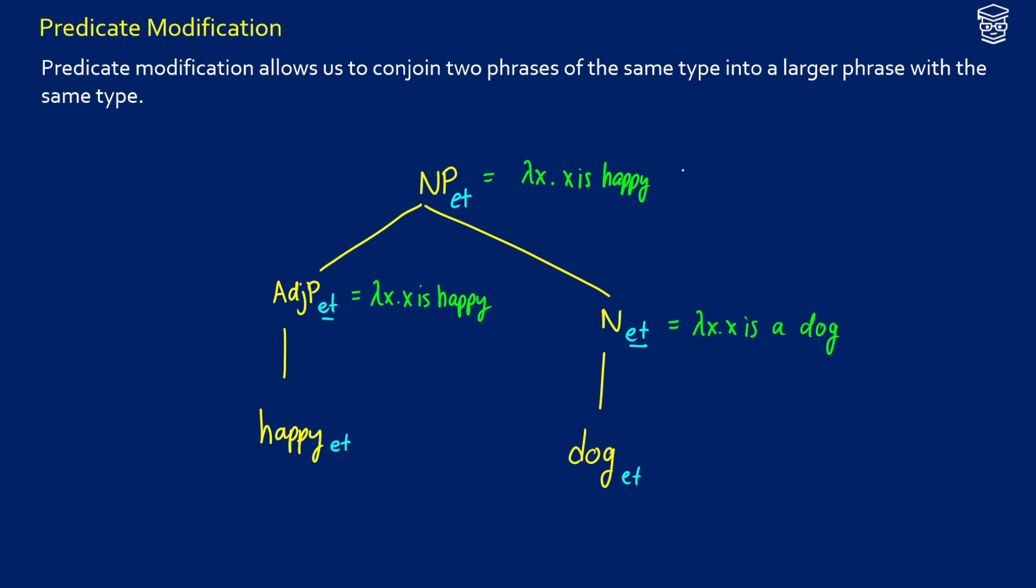So x is happy, it's going to take the left side, and then we're going to conjoin it with the right side, x is a dog. So this is what predicate modification is allowing us to do without doing any of the type shifting that we had to do before.